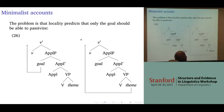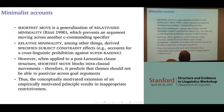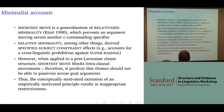The problem is that locality predicts that only the goal should be able to passivize, as in the first diagram in example 26, because if you try to passivize the theme, it has to cross the goal, and this violates the principle of shortest move.